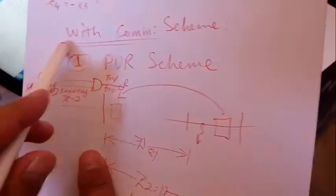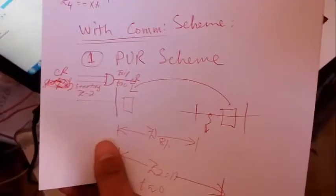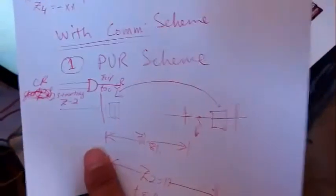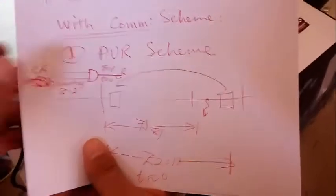After finishing the without-communication scheme, we will now explain the communication scheme. In communication schemes, we have different schemes. The first one is called the Permissive Under Reach scheme.